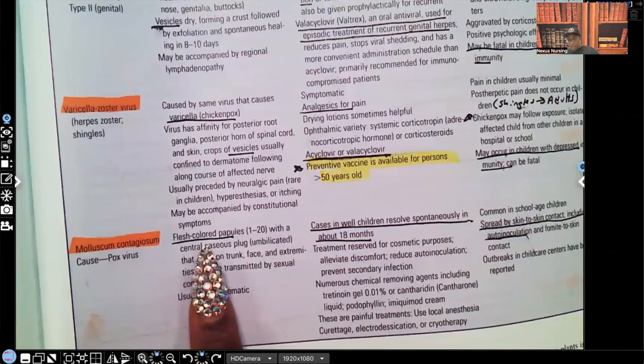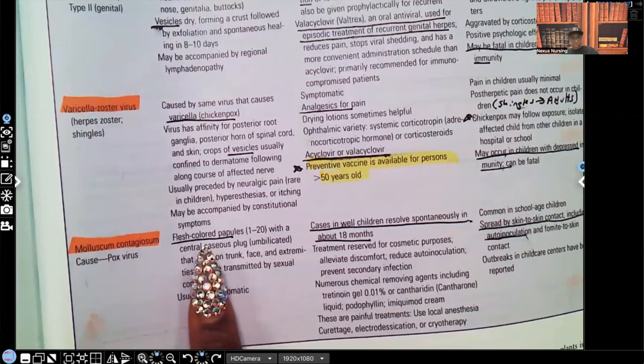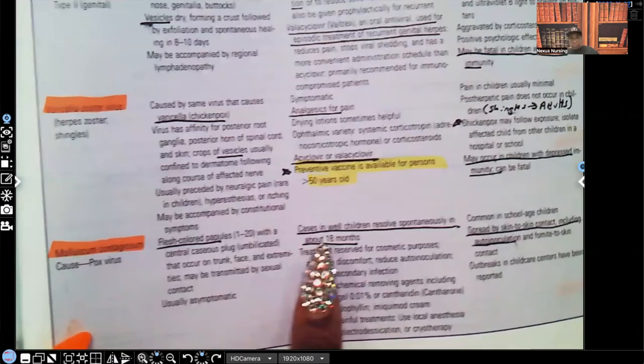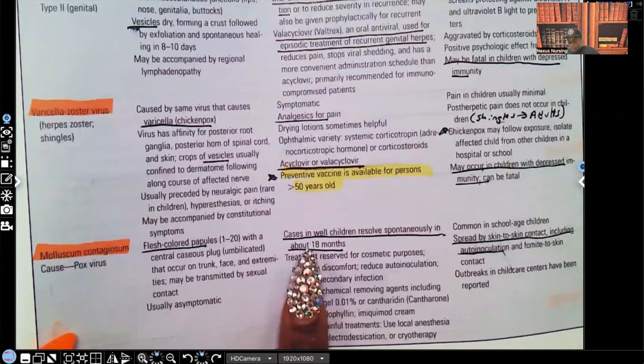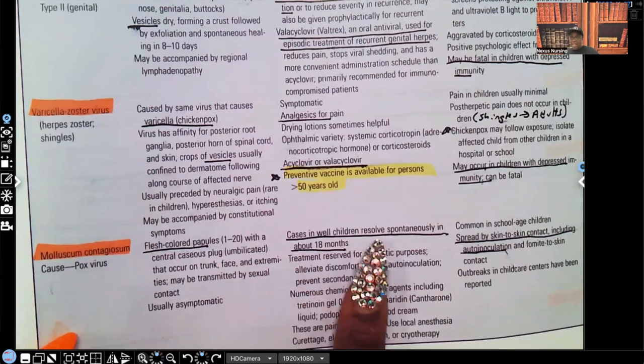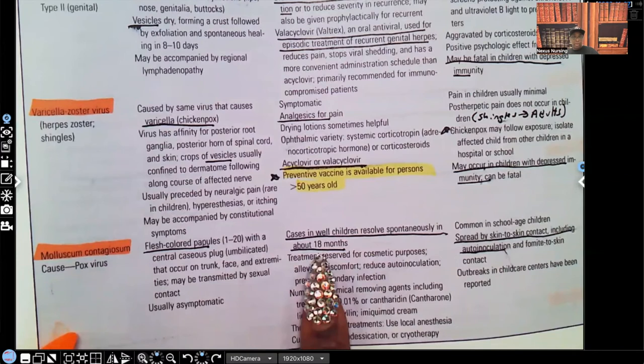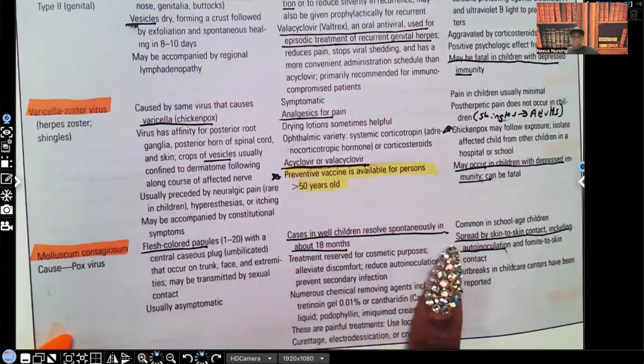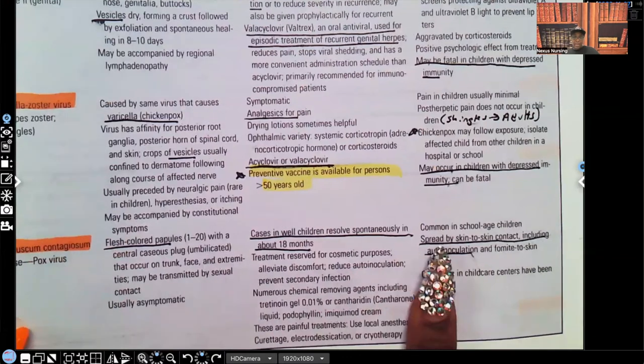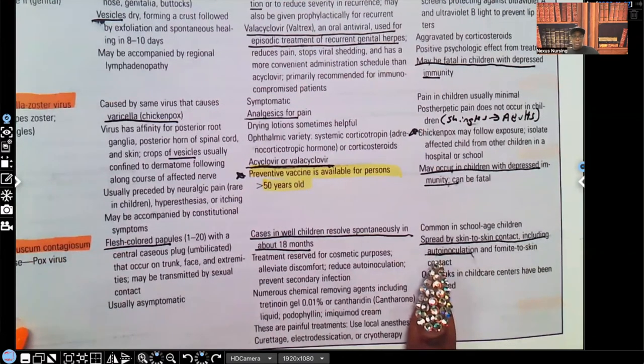Let's keep going. Molluscum contagiosum. Flesh-colored papules around 1 to 20. Cases in well children resolve spontaneously on its own in about a month, a year and a half, 18 months. It's spread by skin-to-skin contact.